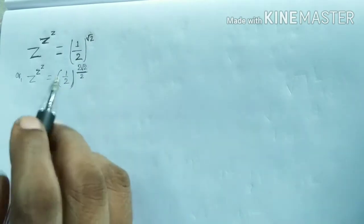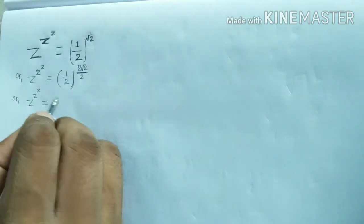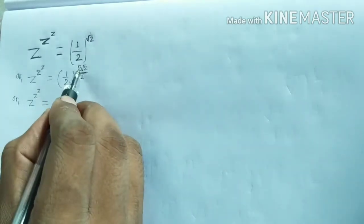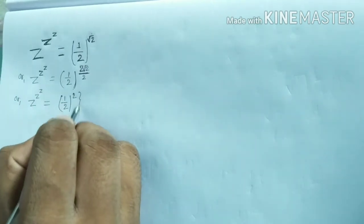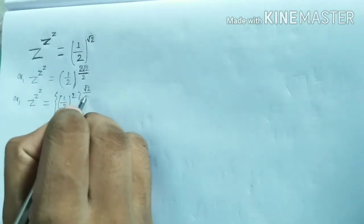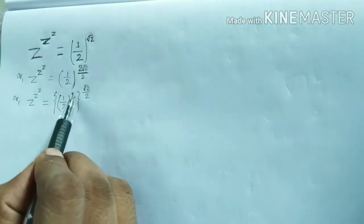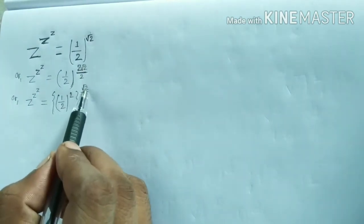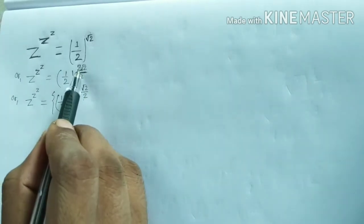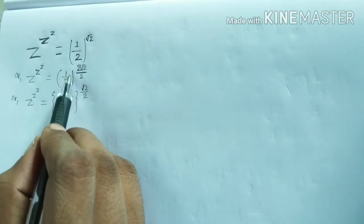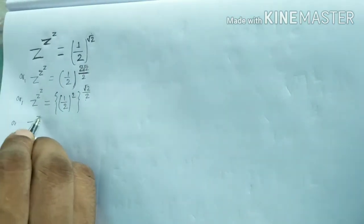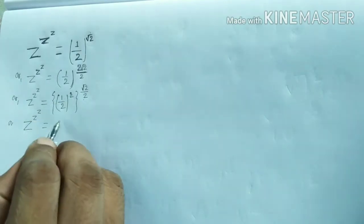So we can write this as this. So z to the power z to the power z is equal to 1 by 2 to the power 1 by 2. Now we can separate this power 2 as its power 2 and then its whole to the power root over 2 by 2. So z to the power z to the power z is equal to 1 by 2 whole square means 1 by 4.